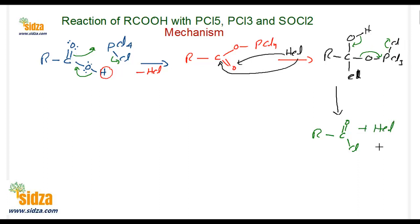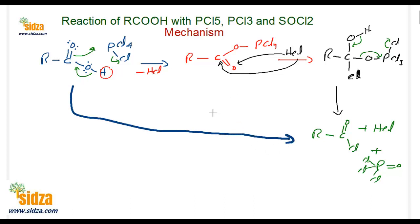What you get is R–C(=O)–Cl (the acid chloride), plus an HCl molecule, plus a phosphorus-containing byproduct: P(=O)Cl₃ (phosphorus oxychloride). So the overall reaction is that from the carboxylic acid you get the acid chloride — the OH group is replaced by Cl coming from the PCl₅ molecule, giving RCOCl. This is the net reaction and the mechanism when PCl₅ reacts with carboxylic acids.